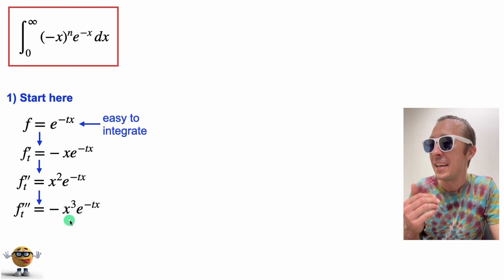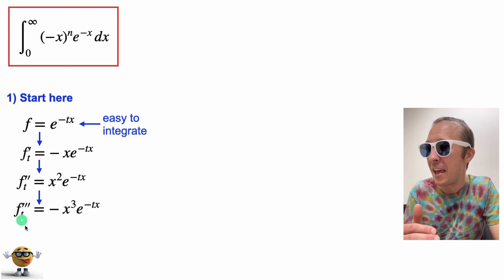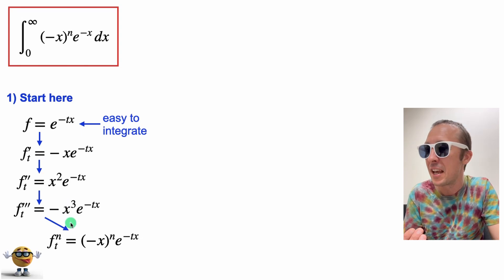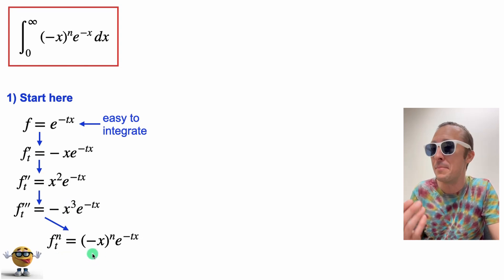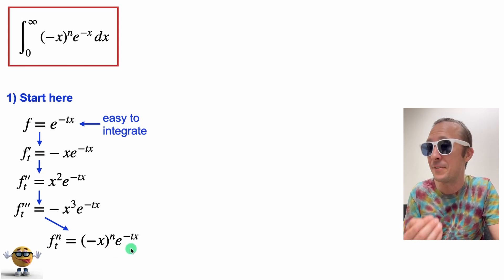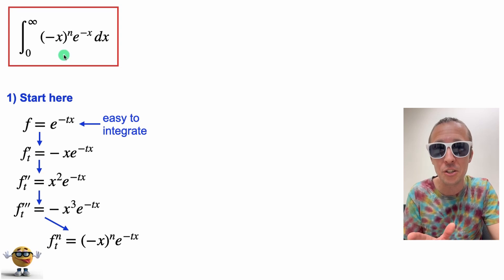So if you look at this pattern that's forming, if we take n derivatives, then the function would become (-x)^n times e^(-tx), which is exactly the function that we want to integrate.